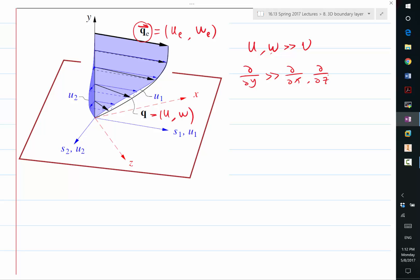So now what you'll find here is that the velocity inside the boundary layer does not have to be in the same direction as the velocity outside the boundary layer.